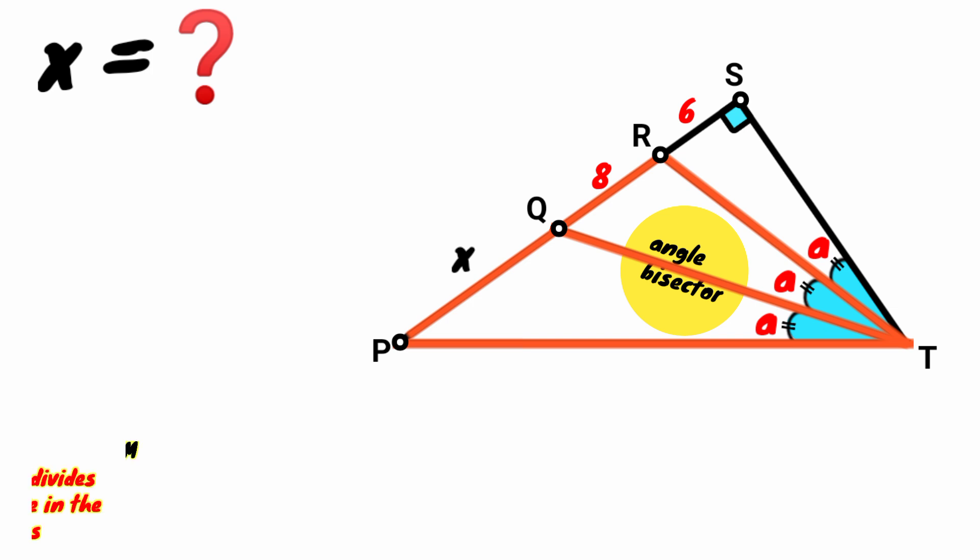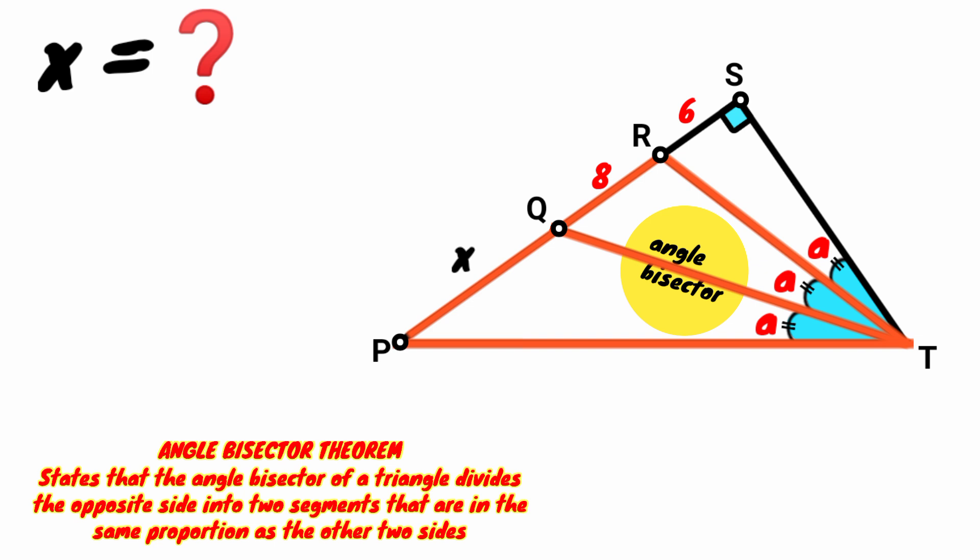Which states that the angle bisector of a triangle divides the opposite side into two segments that are in the same proportion as the other two sides.